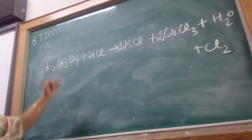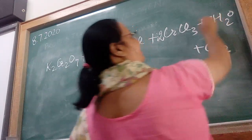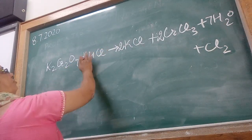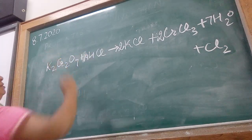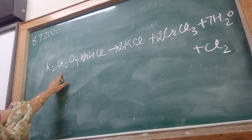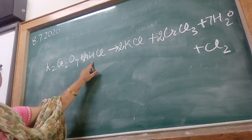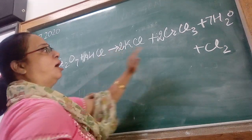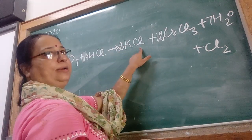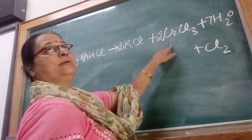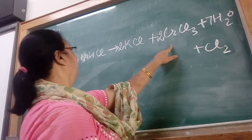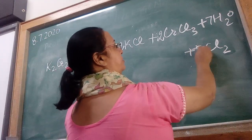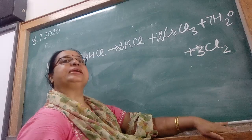Next, let's balance oxygen: 7 oxygen on each side. Then balance hydrogen: 14 hydrogen on each side. Now potassium, chromium, oxygen, and hydrogen are all balanced. What is left? Chlorine. We have 14 chlorine on the HCl side. On the product side, we have 2 chlorine here and 6 chlorine here — that is 8 chlorine total. So we need 6 more chlorine, giving us 6 chlorine in the chlorine gas product. Chlorine is now balanced.